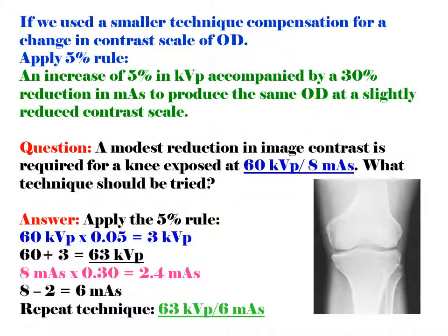If we apply a smaller technique compensation for a change in contrast scale or optical density, we apply the 5% rule: an increase of 5% in KVP accompanied by a 30% reduction in MAS. Why must it be a 30% reduction? Because at least a 30% change in MAS is needed for the difference in radiographic density to be visible — to produce the same optical density at a slightly reduced contrast scale.